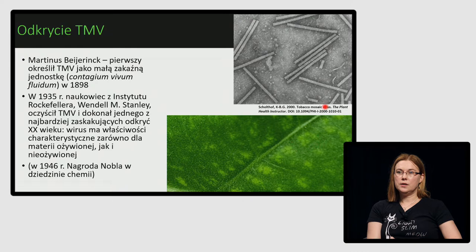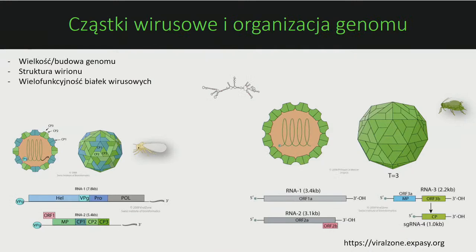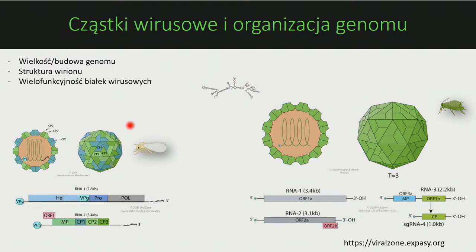Struktura wirionów wirusa TMV ma podłużną formę pałek i nitek. Wirusy roślinne mogą mieć różne wiriony – pałek, nitek, oraz mogą być wirusami sferycznymi i ikozaedralnymi. Teraz kilka słów o wielkości i budowie genomów wirusów roślinnych.